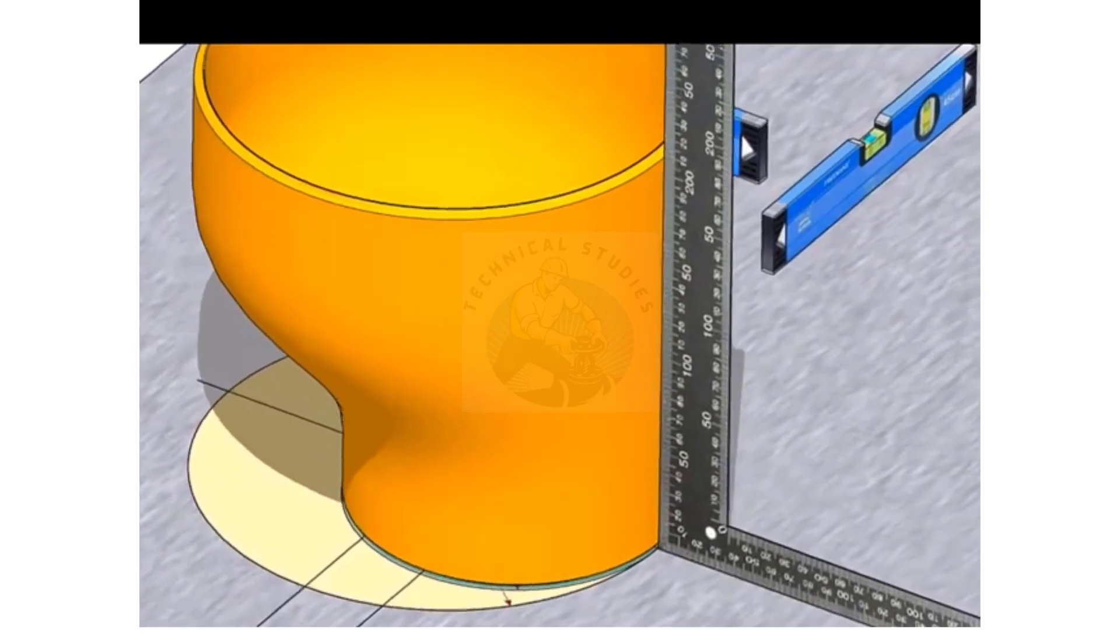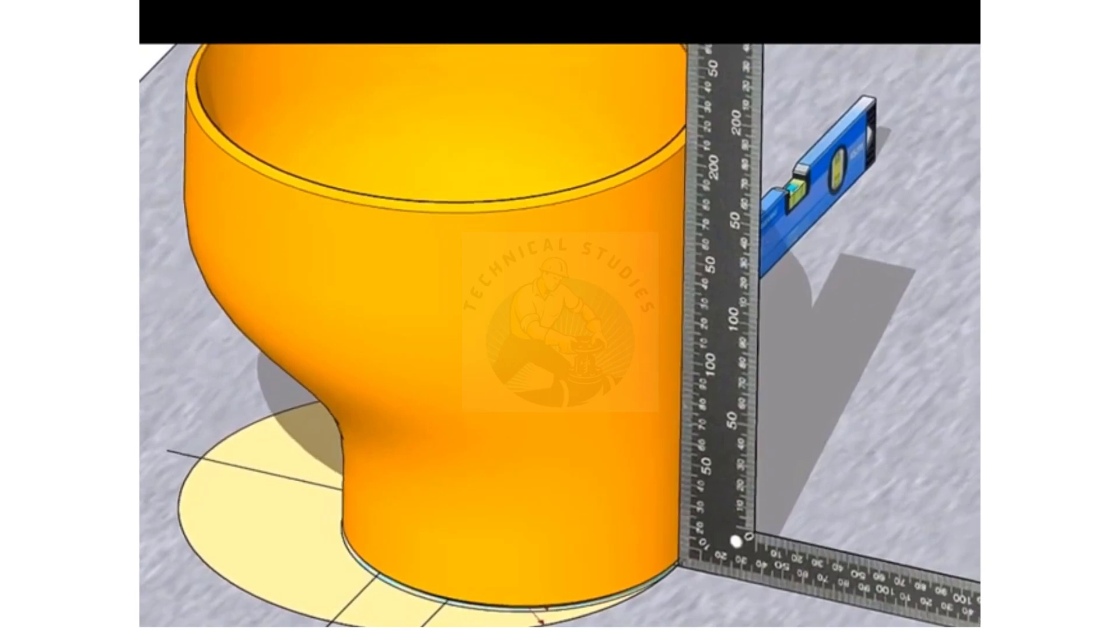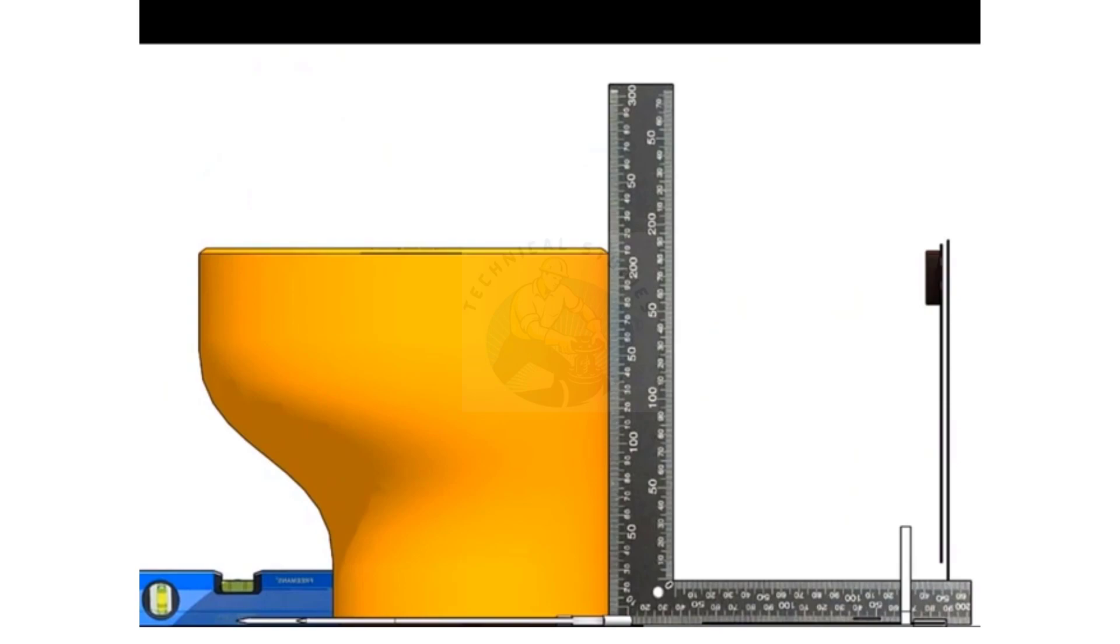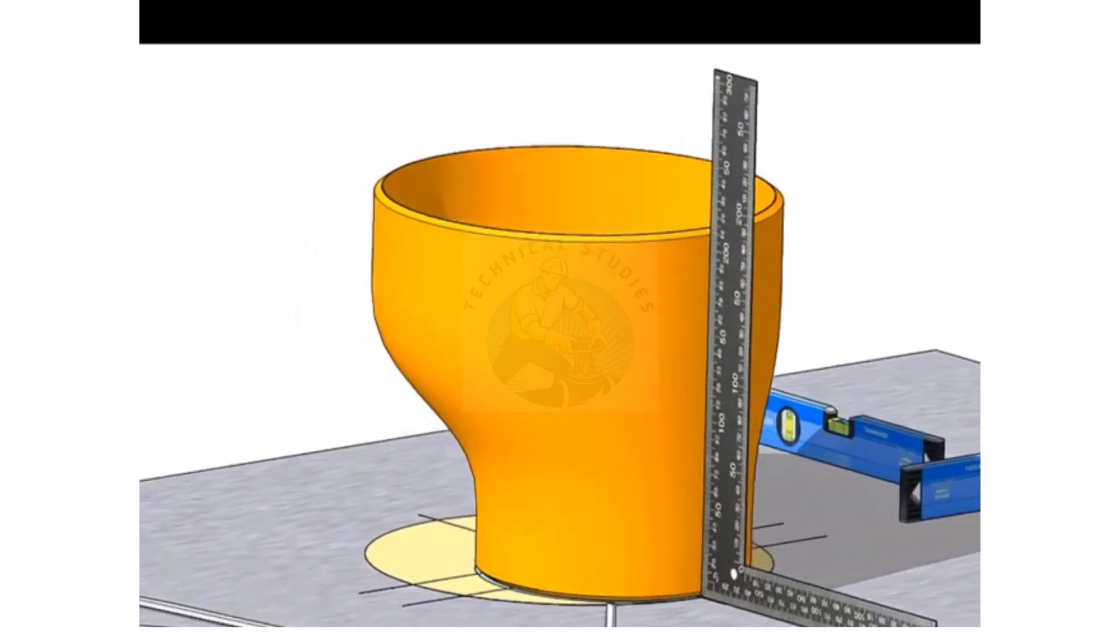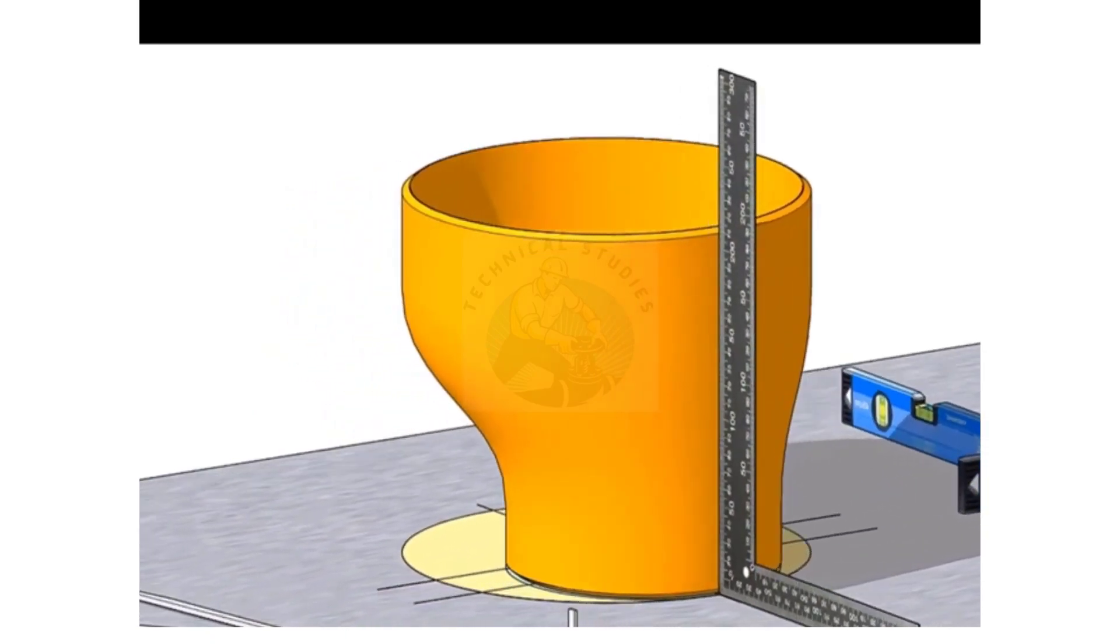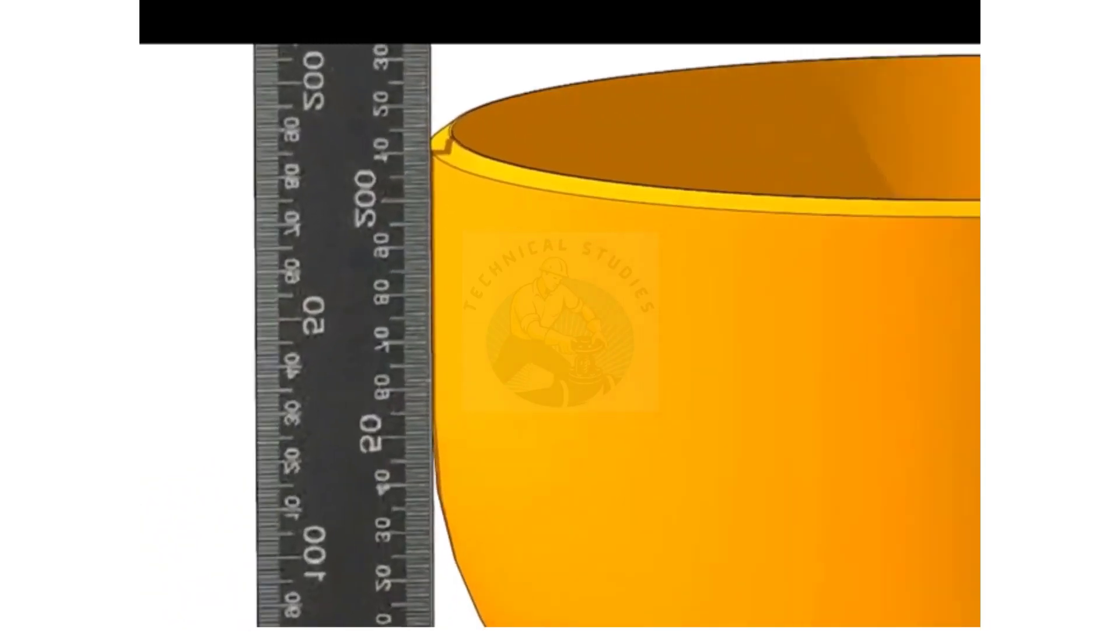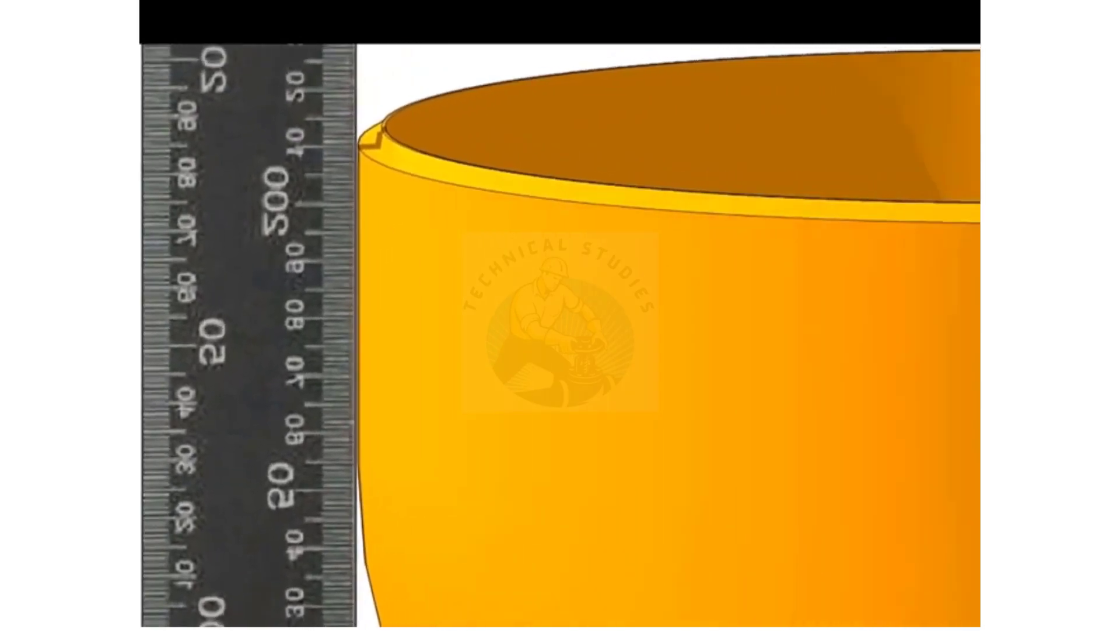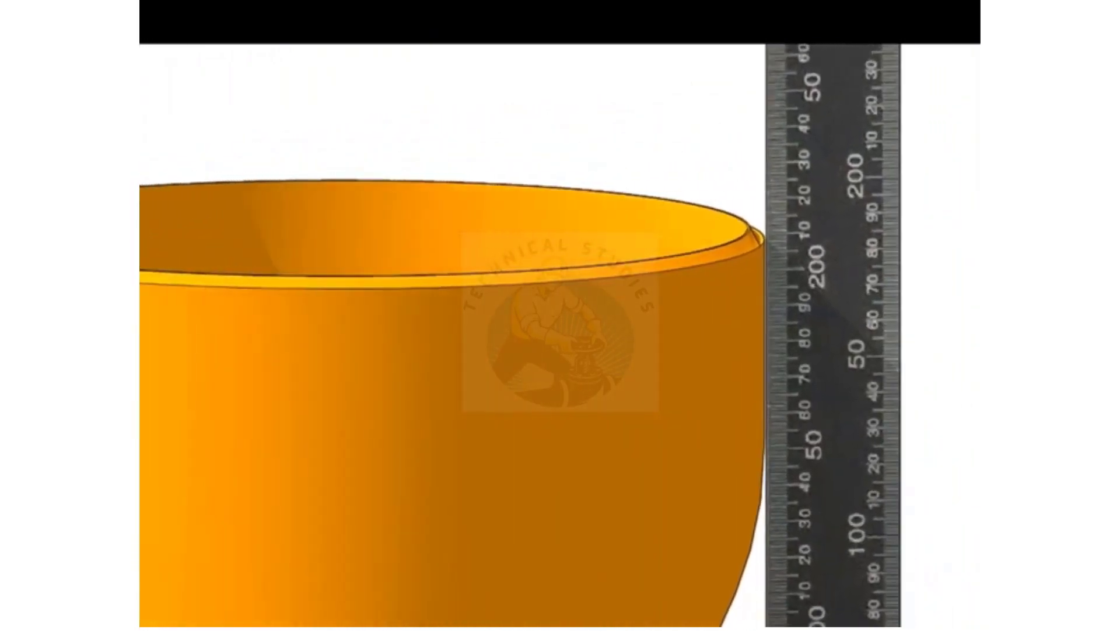Check if the flat side of the reducer is at right angle to the platform. Check if the other sides are good also. If you find any gap on any side, equally divide it on both sides by placing shim plates at the bottom of the reducer.